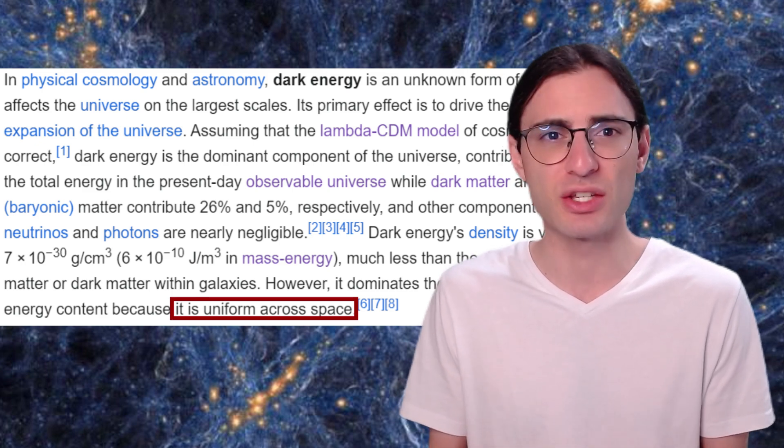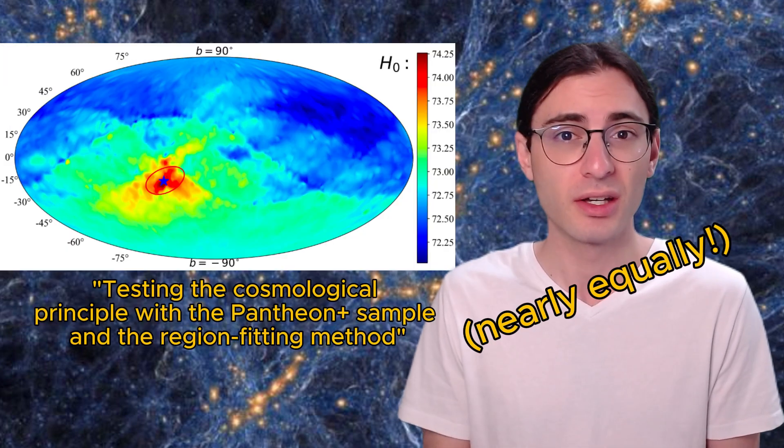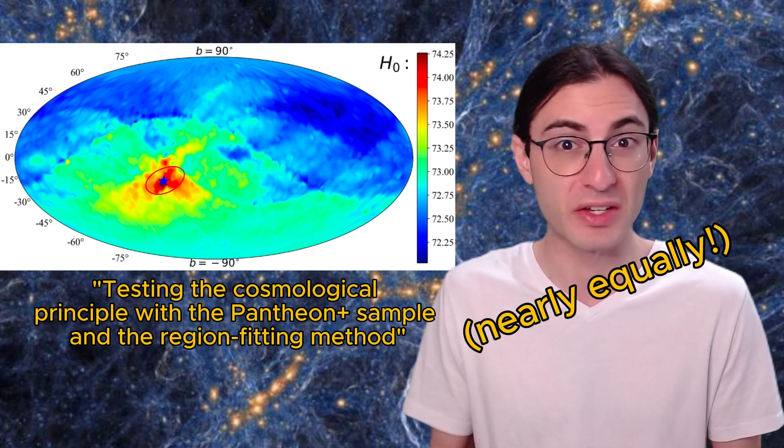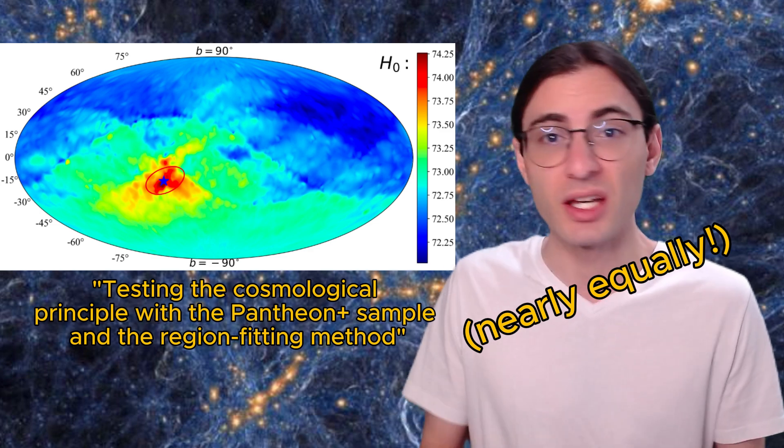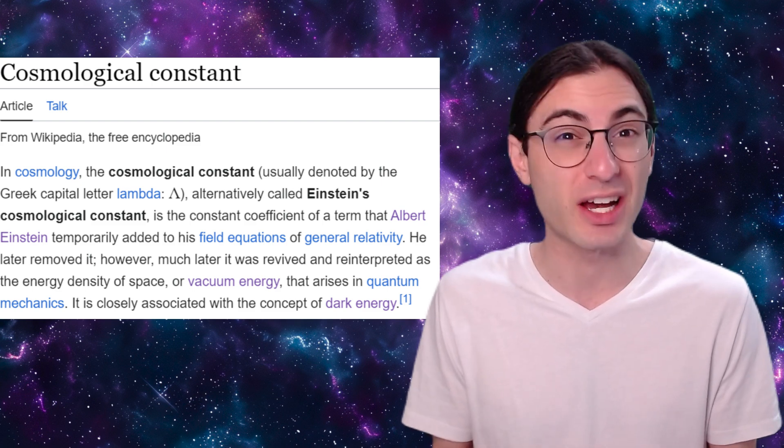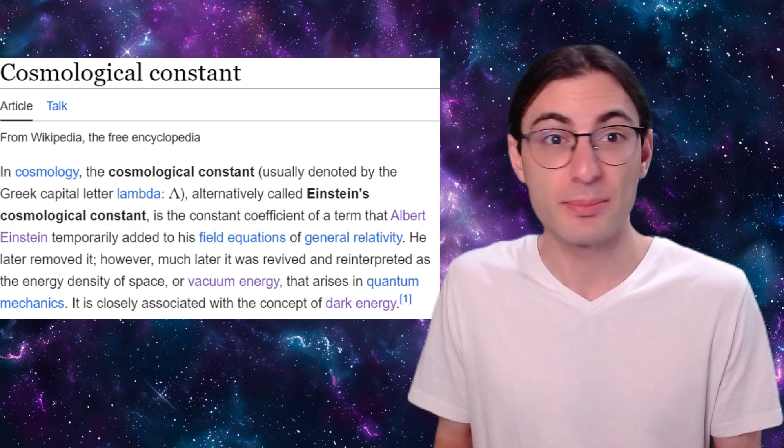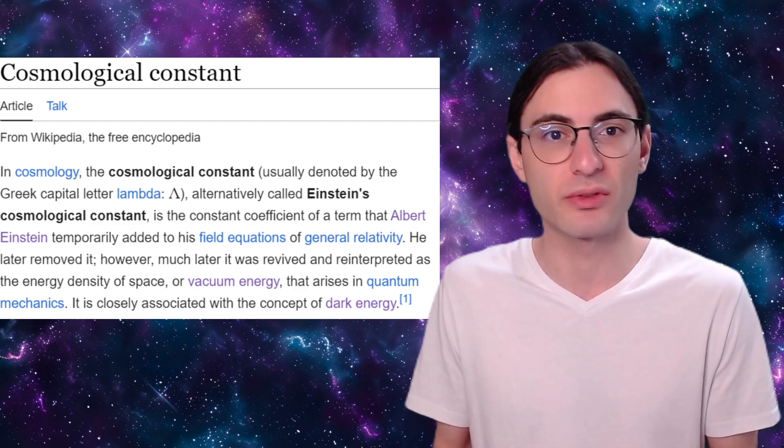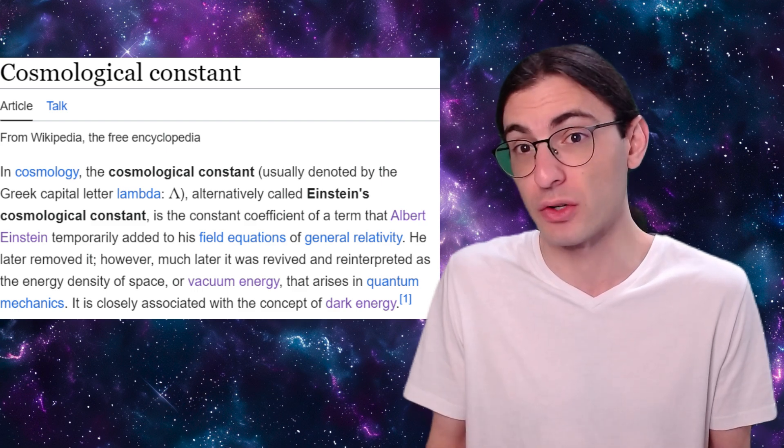Unlike normal matter, which is clumpy, a feature of dark energy is that it seems to be uniform throughout all of space. One way we know this is because the universe seems to be expanding equally in all directions. In fact, one of the potential explanations for dark energy is that it's a feature of the vacuum of space itself. Perhaps it's just the energy associated with the ground state of the quantum fields that permeate our universe, for example.